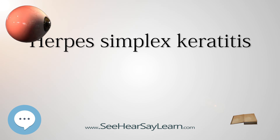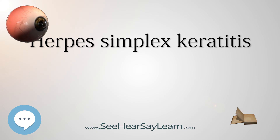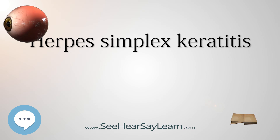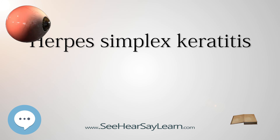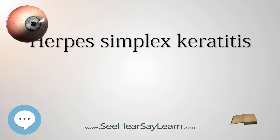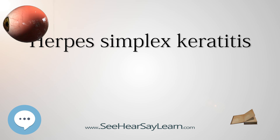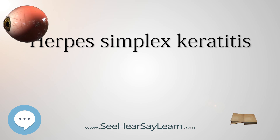Stromal keratitis: Herpetic stromal keratitis is treated initially with prednisolone drops every two hours, accompanied by a prophylactic antiviral drug — either topical antiviral or an oral agent such as acyclovir or valacyclovir. The prednisolone drops are tapered every one to two weeks depending on the degree of clinical improvement. Topical antiviral medications are not absorbed through an intact epithelium, but orally administered acyclovir penetrates an intact cornea and anterior chamber, and may benefit the deep corneal inflammation of disciform keratitis.